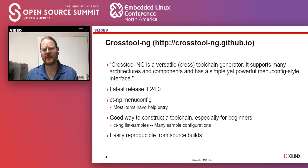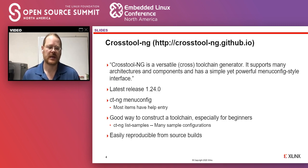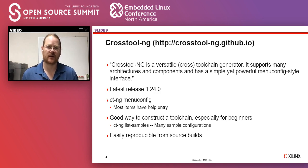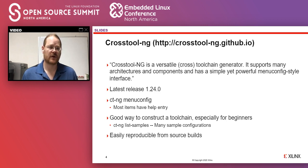Cross Tool NG is what a lot of people are using for bare metal tool chains. When I talk about bare metal tool chains, these are non-operating system-specific tool chains, primarily used for bootloaders, firmware, things like that. Cross Tool NG is an excellent way to get started building bare metal tool chains, as well as tool chains for targeting Linux, such as the Raspberry Pi. The latest version is 1.24.